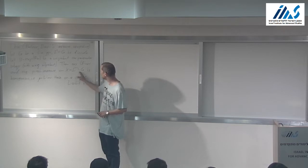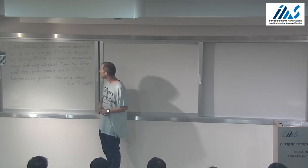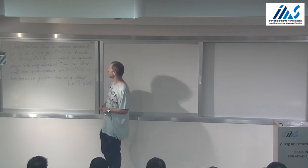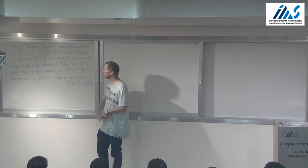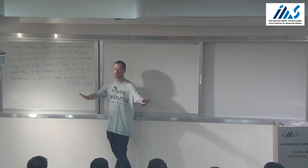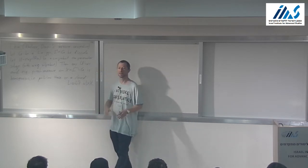You take G mod gamma and ask: what are the U-invariant and ergodic probability measures on this quotient? And they're all algebraic. That's the answer.